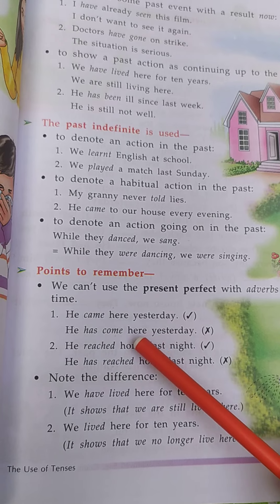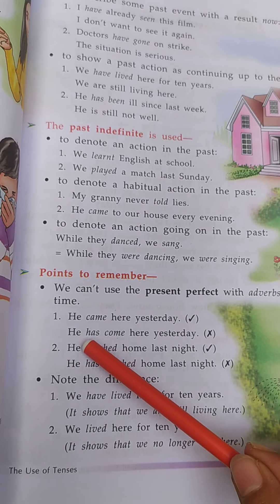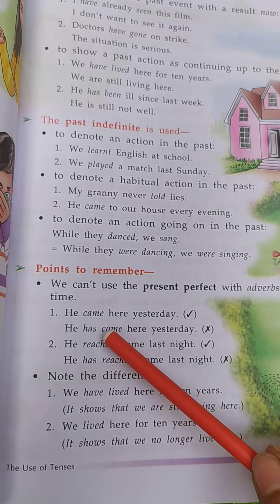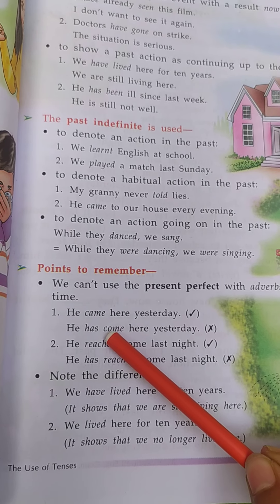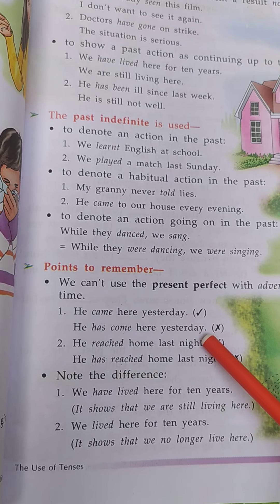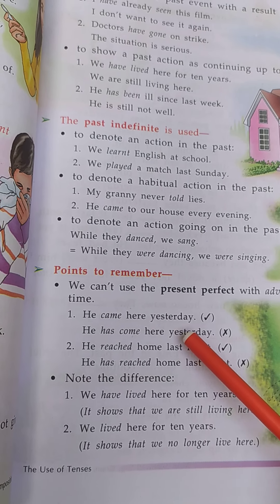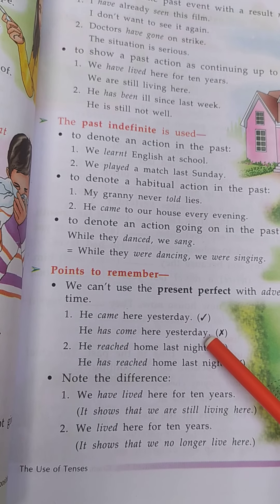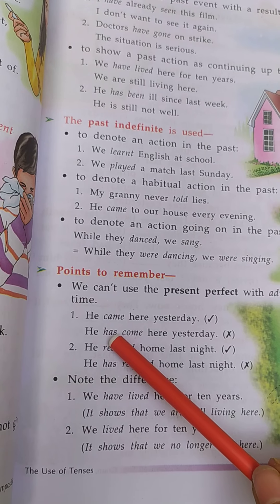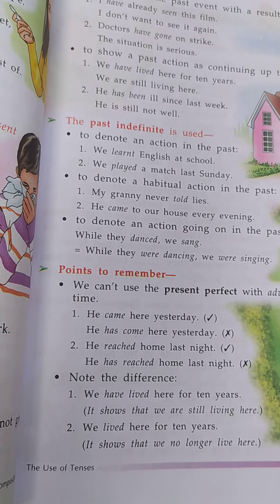Next: he has come here yesterday. इधर present perfect tense यूज़ किया गया है — he has come, means has plus V3, come — किसके साथ? ऐसे एक adverb के साथ — yesterday — जो adverb past time को show करता है। तो इस adverb के साथ present perfect tense यूज़ नहीं होता है। इसलिए sentence गलत है।